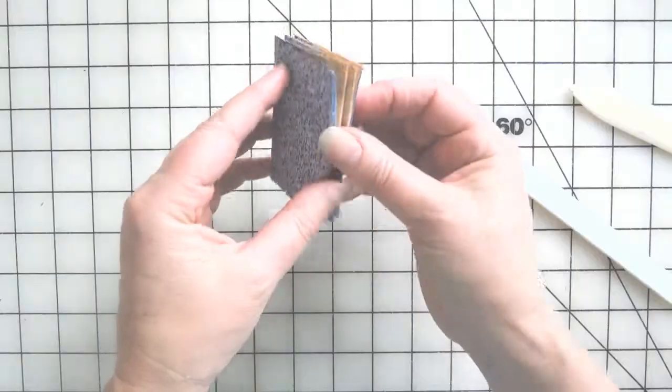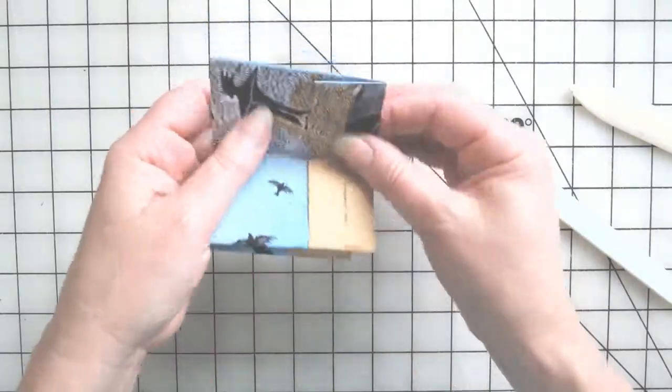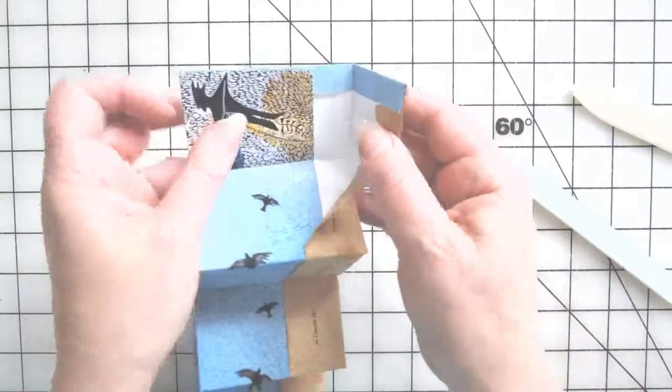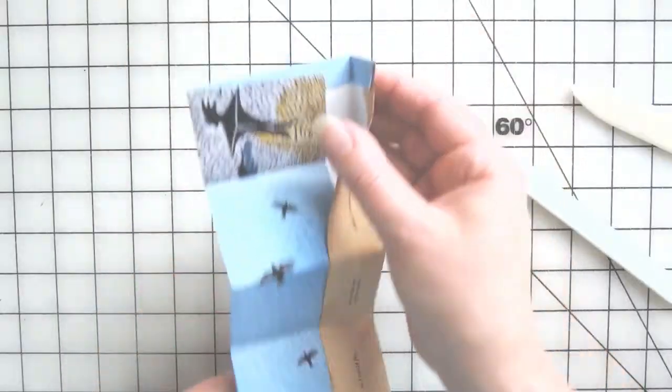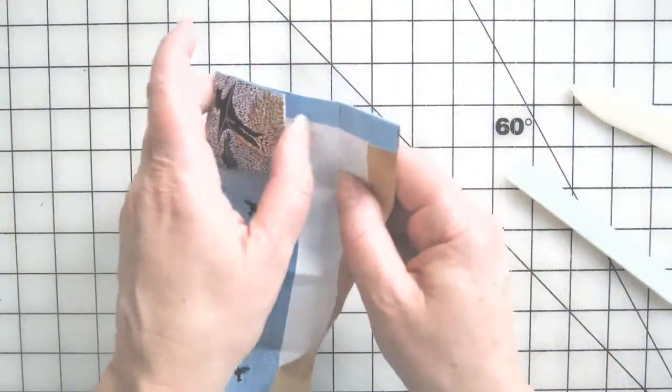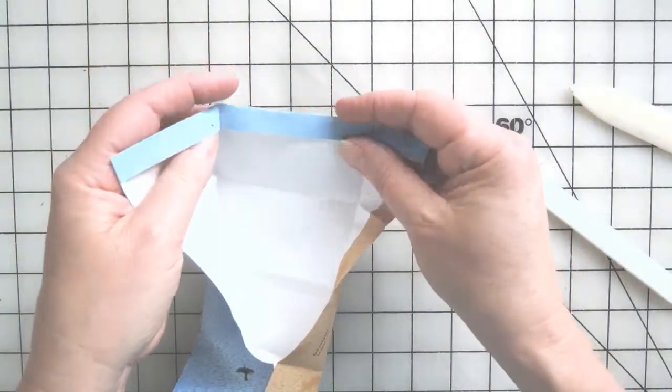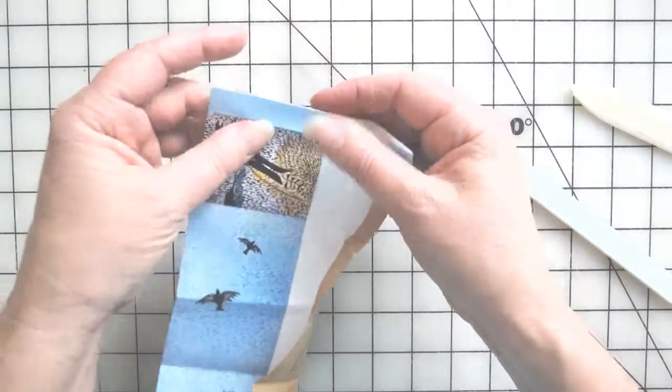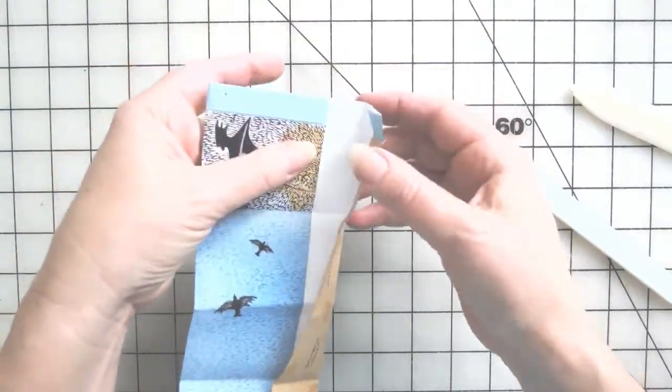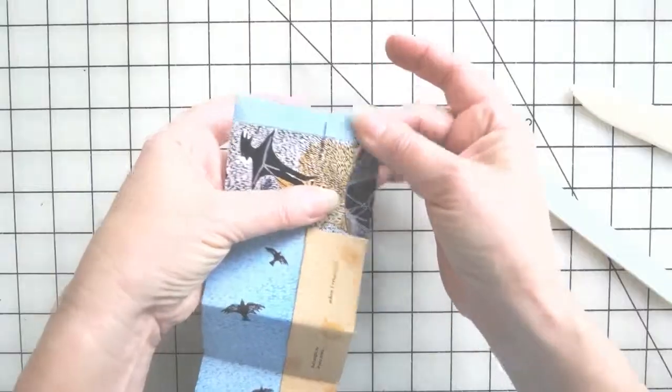But before we do that, you're going to have to arrange this little thing that you folded under on the sides, because we don't want this—we want to be able to have this pocket here.